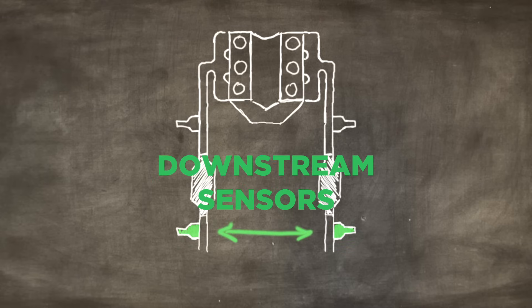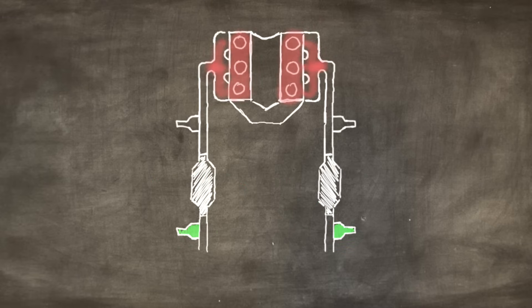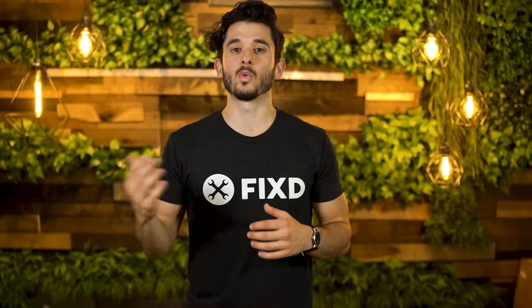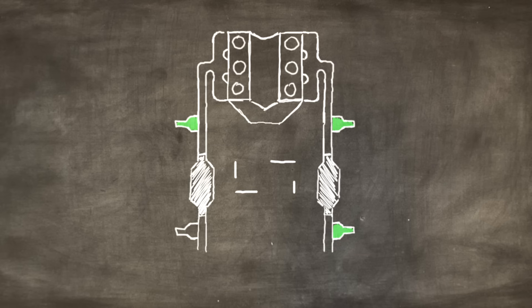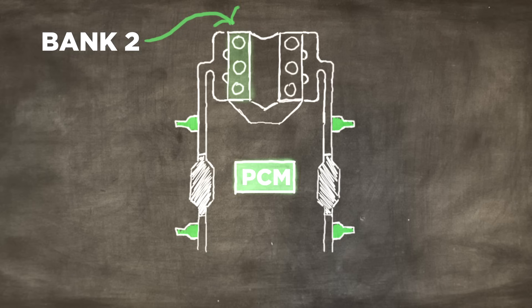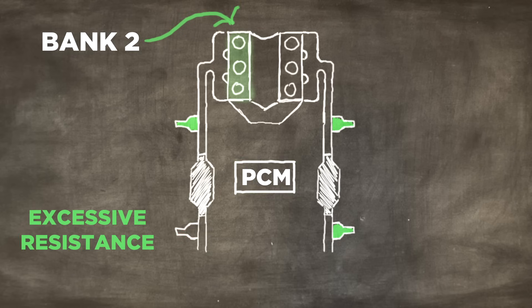Your car's downstream oxygen sensor also monitors the air quality coming out of the catalytic converter. You get P0161 when your powertrain control module tests the downstream oxygen sensor in bank 2 of your engine and it detects a short or excessive resistance in that heating circuit.